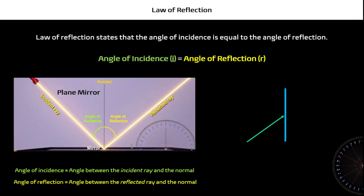First things first, the law of reflection states that the angle of incidence is equal to the angle of reflection. What it means is that if your light ray is going to strike a plain flat surface, the angle at which it is going to reflect will be the same. The angle of incidence means the angle between the incident ray and the normal, and the angle of reflection means the angle between the reflected ray and the normal.